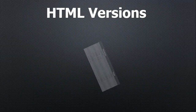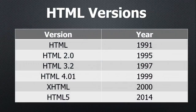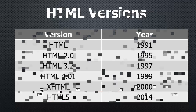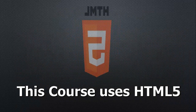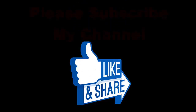Regarding HTML versions: in 1991 the first HTML version came out, simply called HTML. Then in 2014 we got the last version, HTML5. In this course we are using HTML5. That's enough for the HTML introduction video. In the next video we will create our first new web page. Thank you for viewing.